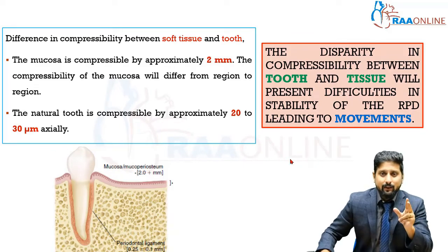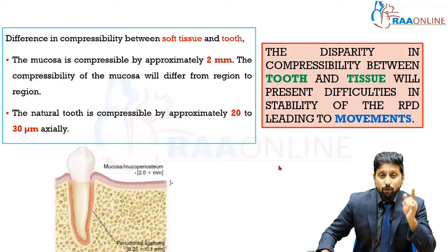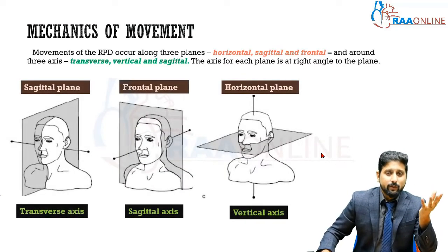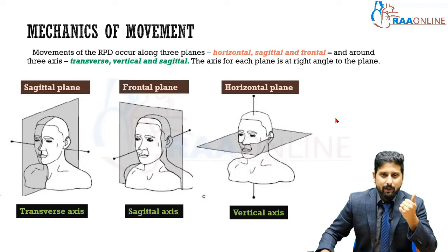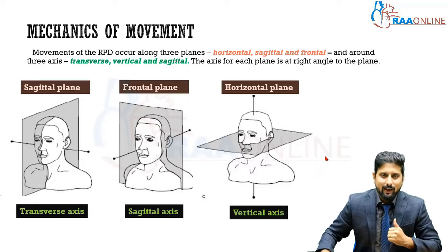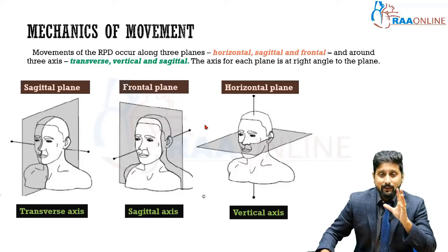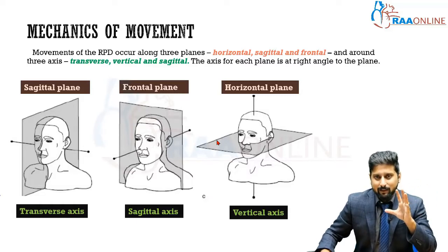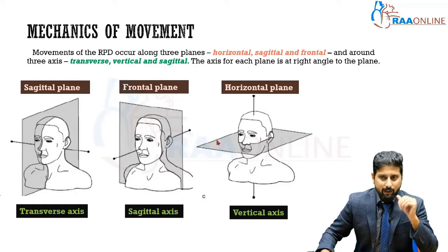This disparity in compressibility between tooth and tissue presents difficulties in the stability of the RPD, leading to movements of the removable partial denture. To understand what types of movements are happening, we know that any movement can be explained via three planes and three axes, since we live in a three-dimensional world. These are all imaginary planes and axes used to understand the movement of the removable partial denture — where and how these movements are taking place.